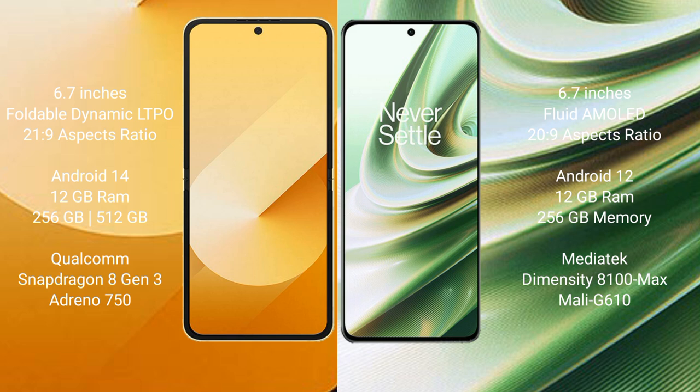Samsung Galaxy Z Flip 6 runs on the Android 14 operating system, while the OnePlus 10R runs on Android 12. The Samsung Galaxy Z Flip 6 comes with 12GB RAM and 256GB or 512GB internal storage, powered by the Qualcomm Snapdragon 8 Gen 3 processor.